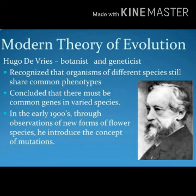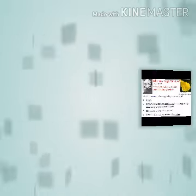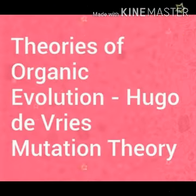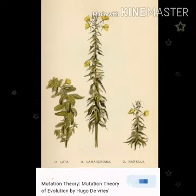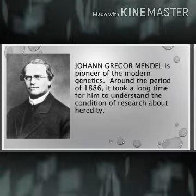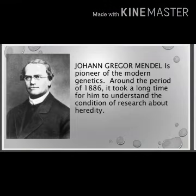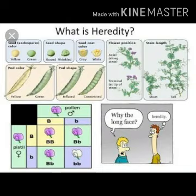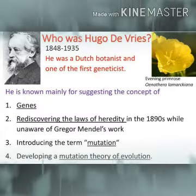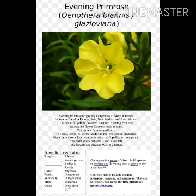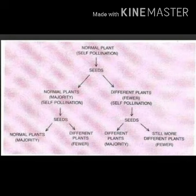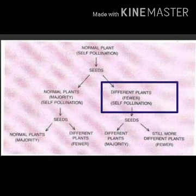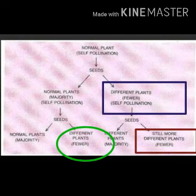In 1901, Hugo De Vries understood the reason behind sudden changes due to mutation theory. Mutation theory helped him to understand slow changes in genes. He noted that most offspring look like the parent but some look different. He selected a plant, the evening primrose. After self-pollination, he observed that the maximum number of plants showed minor variation and few plants showed major variation. The group of plants which showed major variation were again self-pollinated, and these major changes continued in every generation, which resulted in evolution.